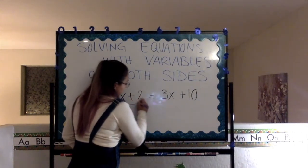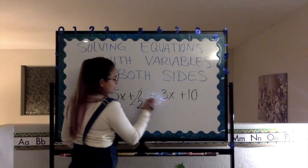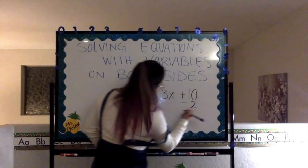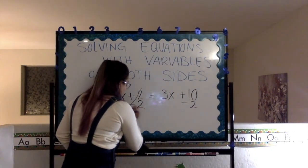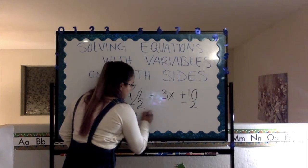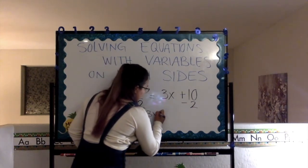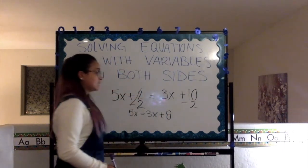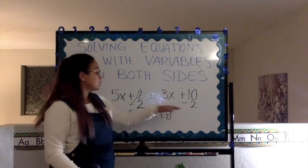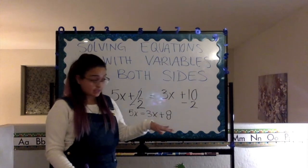So, I'm going to subtract 2 to both sides. That leaves us with 5x equals 3x plus 8. Why plus 8? Because, if you subtract 2 from positive 10, your answer is 8.